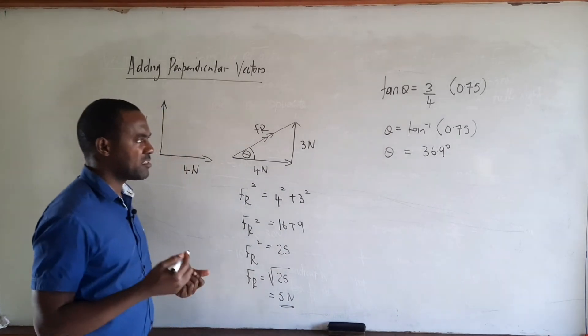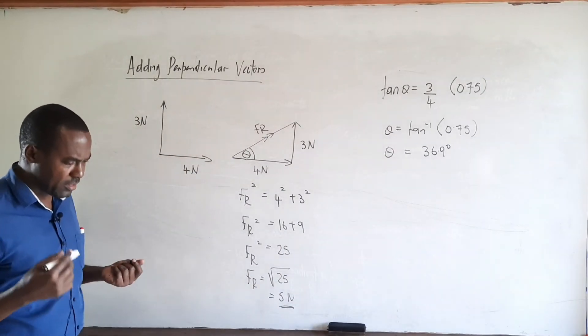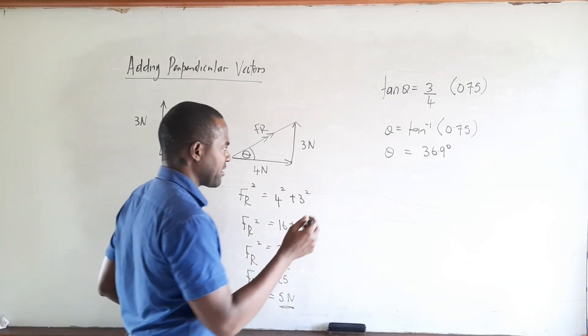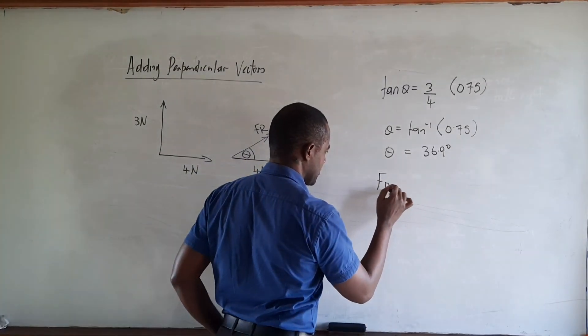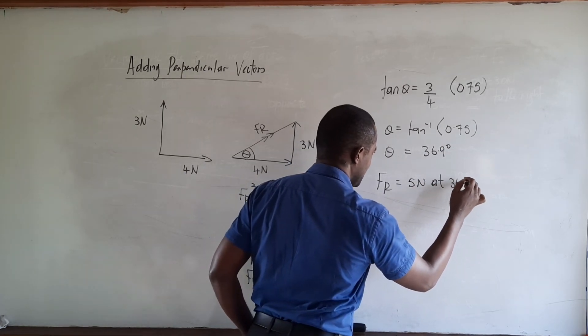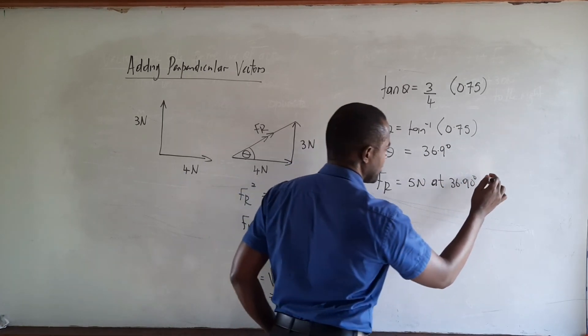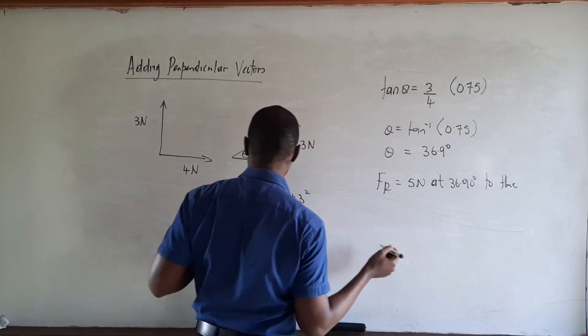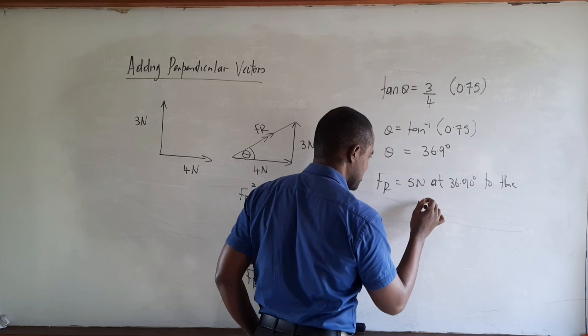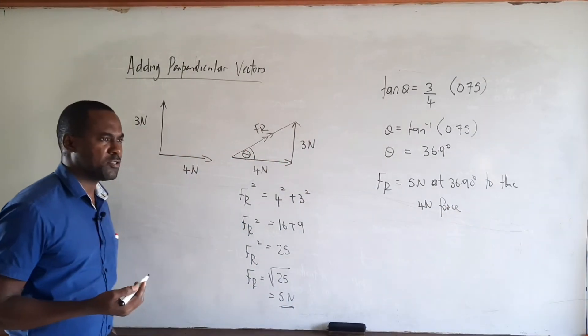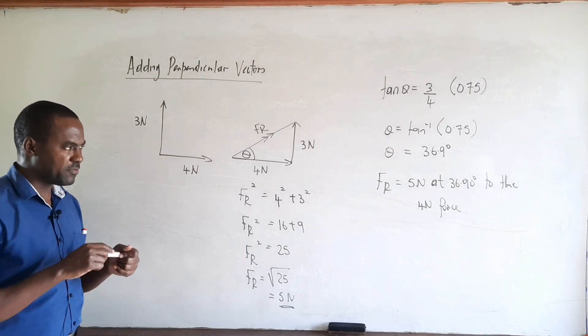So the angle is 36.9 degrees. Now if we want to state the resultant together with its magnitude and direction, we would say that FR equals 5 Newtons at 36.9 degrees to the horizontal, or we could say to the 4 Newton force. So having made that statement, we've stated our resultant force with its magnitude as well as its direction.